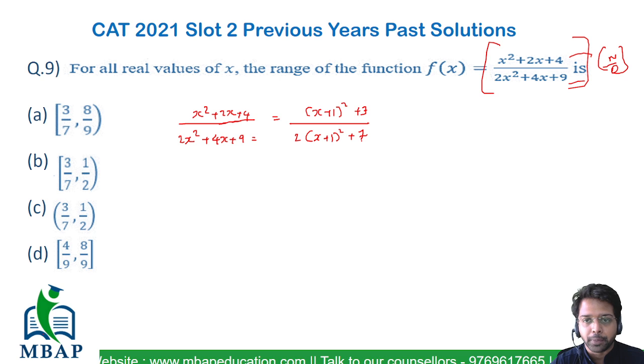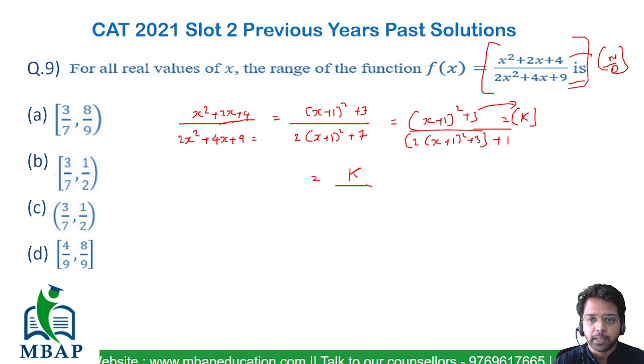Let me rewrite this as [(x+1)² + 3] divided by [2((x+1)² + 3) + 1]. Now at least this time (x+1)² + 3 will be a common part. Let me assume that to be a constant k. So the whole expression will become k/(2k+1).